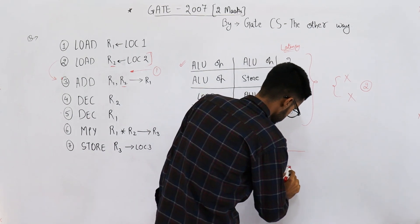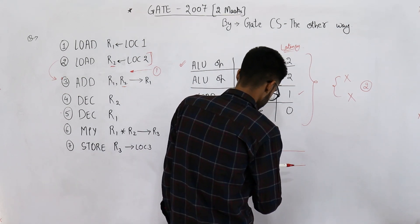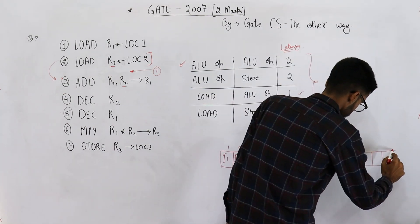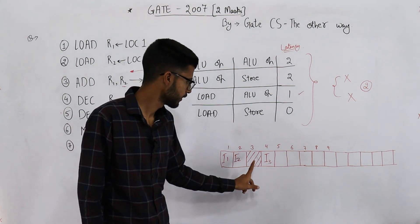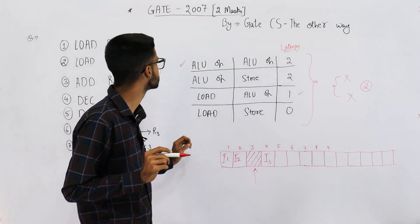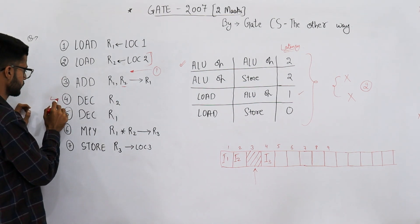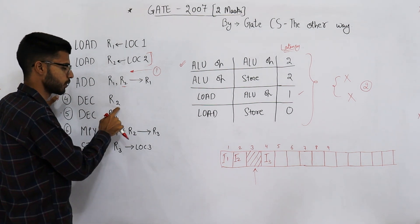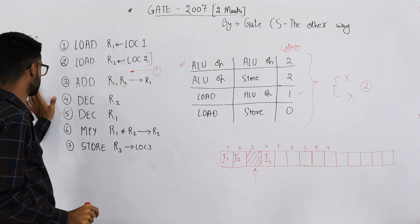Let's draw the Gantt chart. There has to be a latency of one between instructions two and three — we have added that latency by making the CPU stall for one cycle. Now let's analyze the fourth instruction, which is decrement R2. Instruction three produces result R1, and instruction four uses register R2, so there is no dependency.